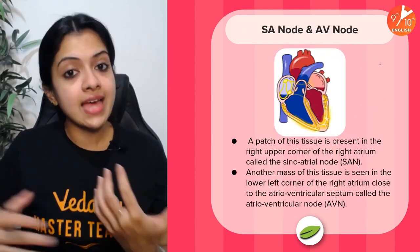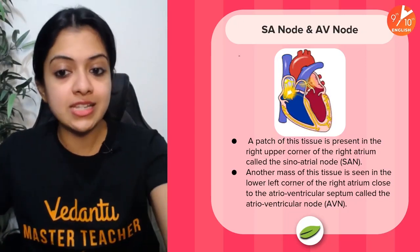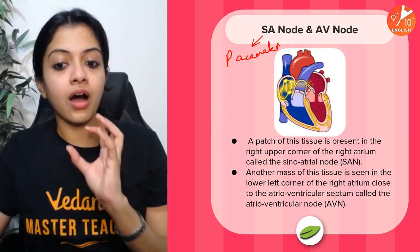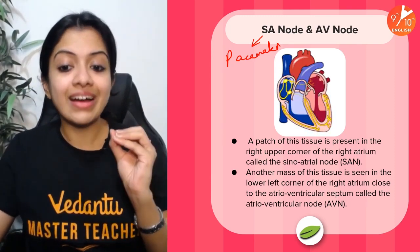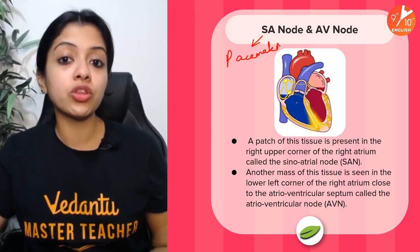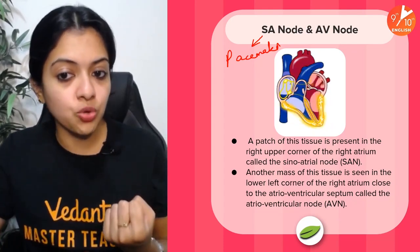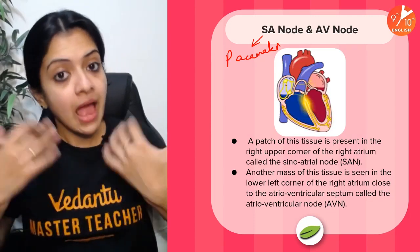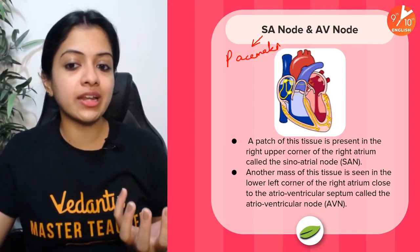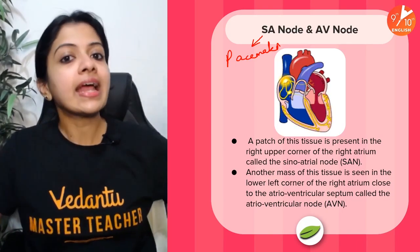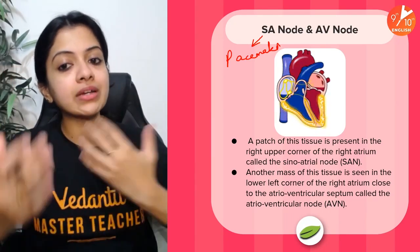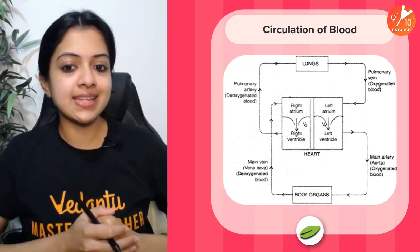The heart is self-excitatory. The pacemaker of the heart is what we call the sinoatrial node, or SA node. It is a patch of tissue found in the right upper corner of the right atrium. The SA node generates excitatory impulses and passes them on to the atrioventricular node, or AV node. From there, the impulse spreads further across the entire wall of the heart via the bundle of His and the Purkinje fibers — that is the conducting system of the heart.